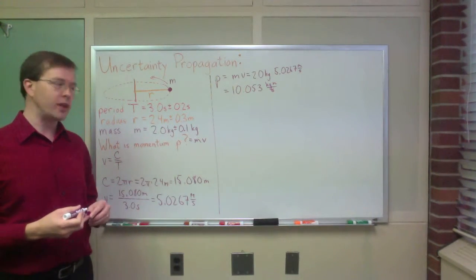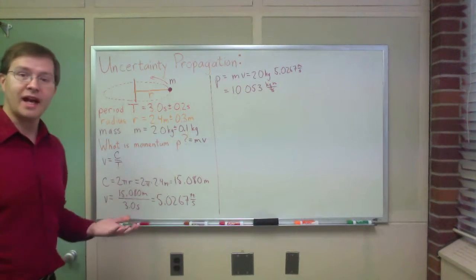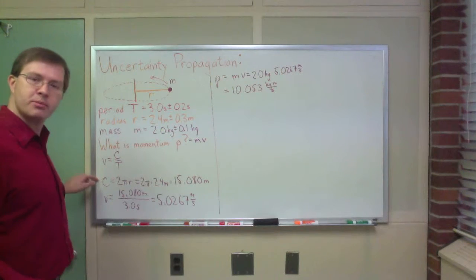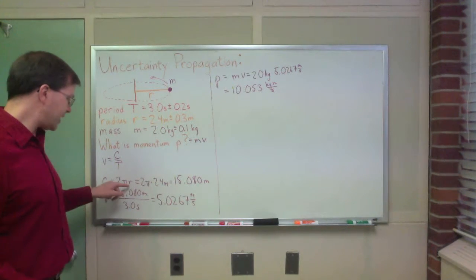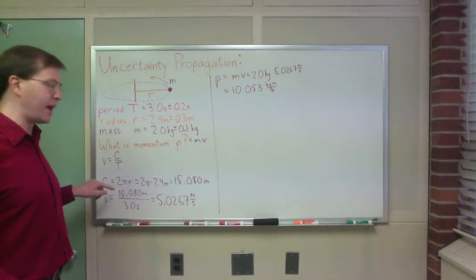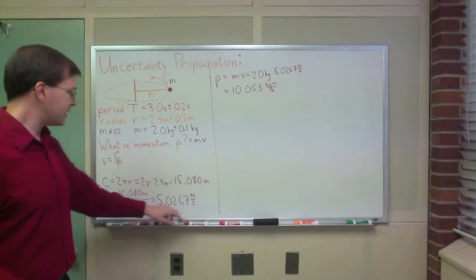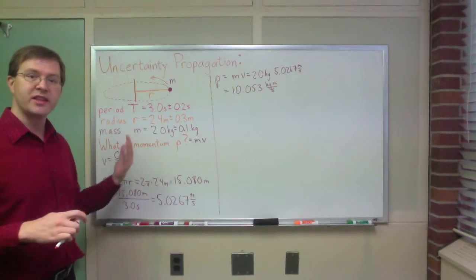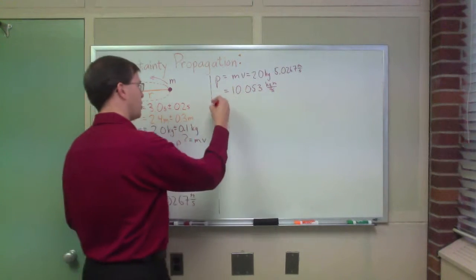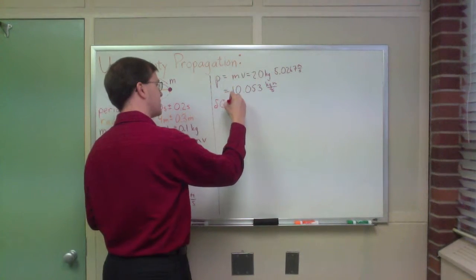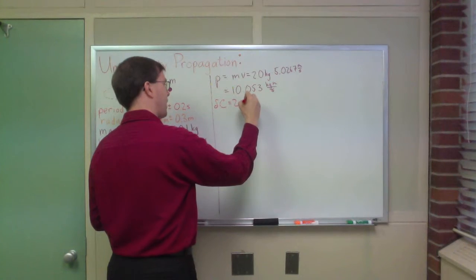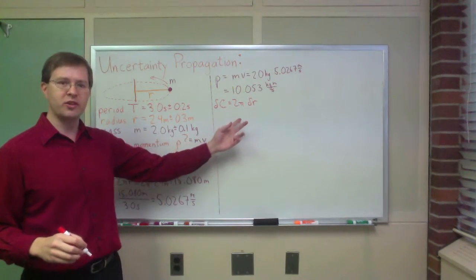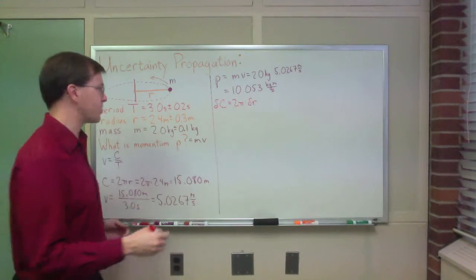Now, how do I propagate uncertainty through that calculation? I'm glad you asked. How do we do that? Well, I go through step by step. In this step, the circumference step, I'm taking an uncertain quantity and multiplying it by a constant. That means that I can propagate uncertainty in the usual way for constants, I just multiply the uncertainty by the same constant. So my uncertainty in the circumference is going to be equal to 2 pi times the uncertainty in my radius. Again, 2 pi has no uncertainty associated with it, that's just a definition of circumference, essentially.